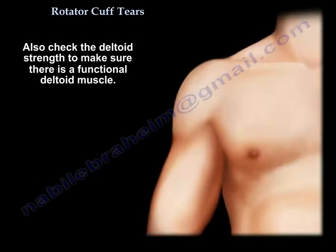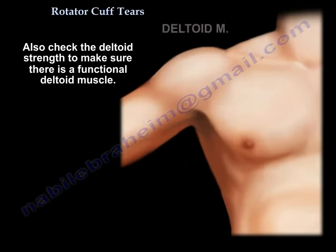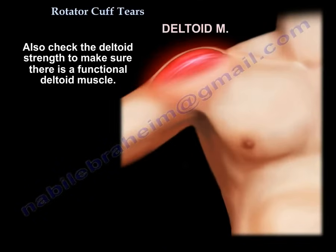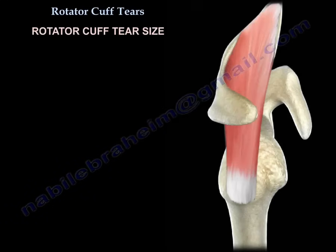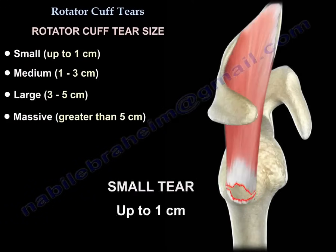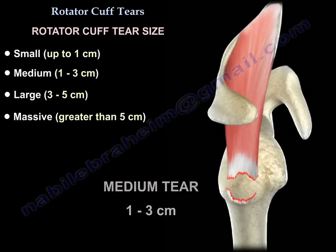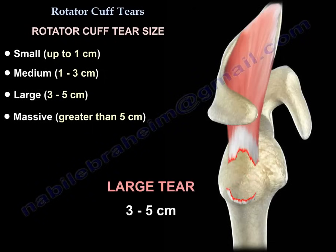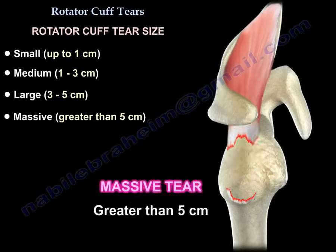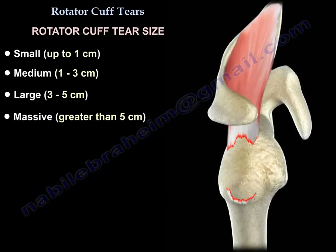You also need to check deltoid strength to make sure you have a functional deltoid muscle. Regarding tear size classification: small tears are up to 1 cm; medium tears are 1 to 3 cm; large tears are 3 to 5 cm; massive tears are more than 5 cm or involve multiple tendons.